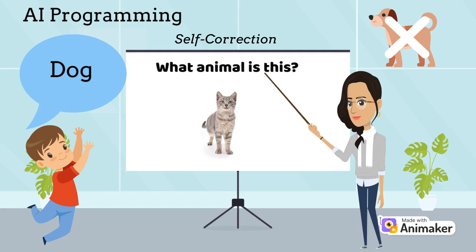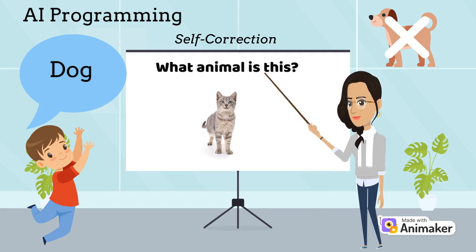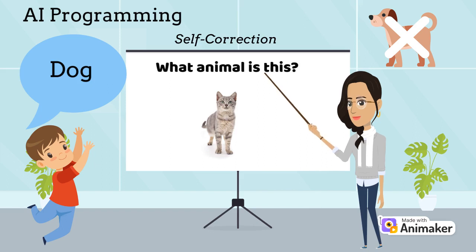To understand self-correction a bit more, let's go back to the previous example. Suppose you show a cat to a child, and then show him or her a different cat, but he or she says that it's a dog — then you would naturally correct them, and they would keep it in mind the next time they see a cat.